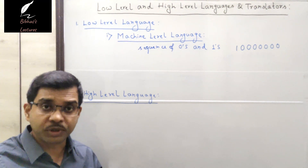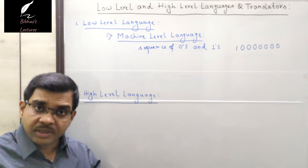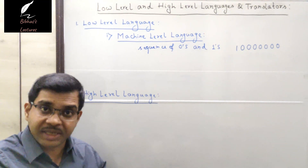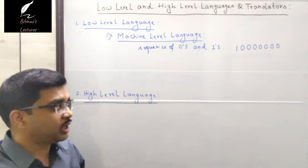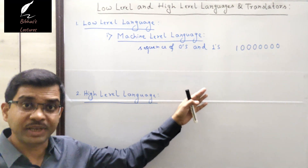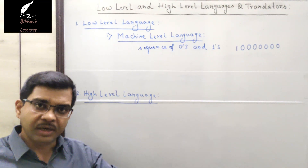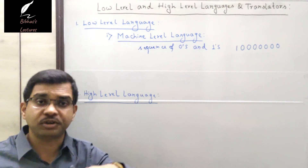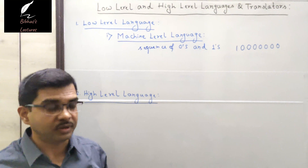If a programmer wants to write a program in machine level language, they must have extensive knowledge about the architecture and hardware specifications of that particular machine. Otherwise it is very difficult. Since it is machine specific, it is not portable — the machine language written for one machine may not run on another machine.